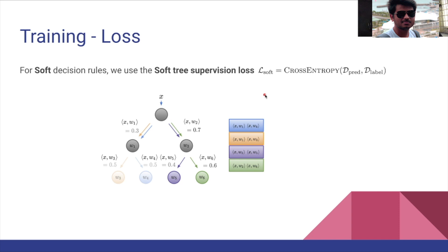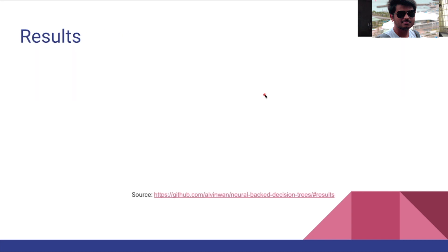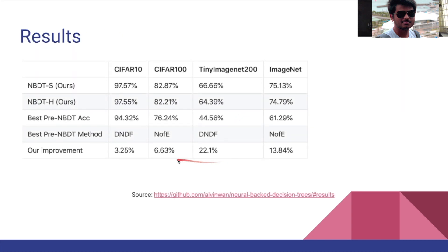Let's see how this actually performs. NBDTs have improved accuracy by 3 to 13 percent across different datasets compared to pre-NBDT neural network and decision tree hybrids, which were not performing as well.